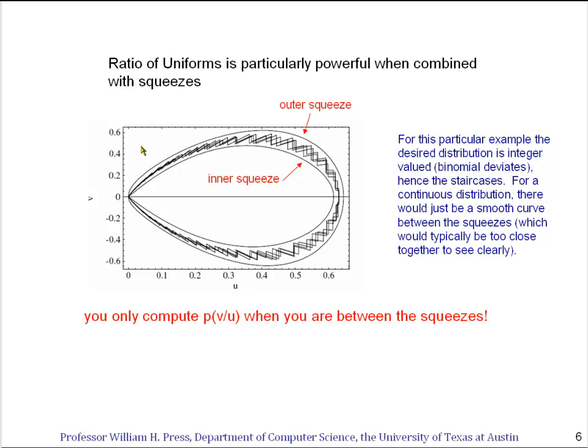So now you see this rejection method in the UV plane becomes much more efficient because if I'm outside the outer squeeze, I know that I'm going to reject. And if I'm inside the inner squeeze, I know I'm going to accept. And it's only in the case that I'm between the squeezes that I actually have to go off and evaluate the probability distribution that I'm interested in, which may be something complicated to evaluate. So the idea is make the squeezes as tight as possible around the actual teardrop to get a very, very efficient algorithm.